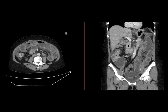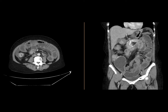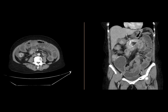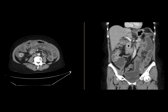Differential possibilities for this include a potential adenocarcinoma, although the hypervascularity would be unusual. A carcinoid tumor could also be considered, although the length of this would be a little bit longer than you would expect for a carcinoid tumor. This patient has a history of breast cancer, and this turned out to be a breast cancer metastasis to the bowel, resulting in a small bowel obstruction.